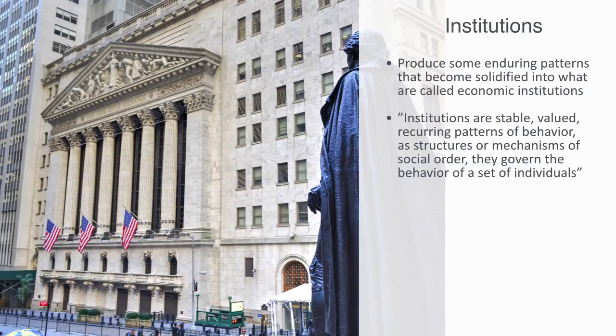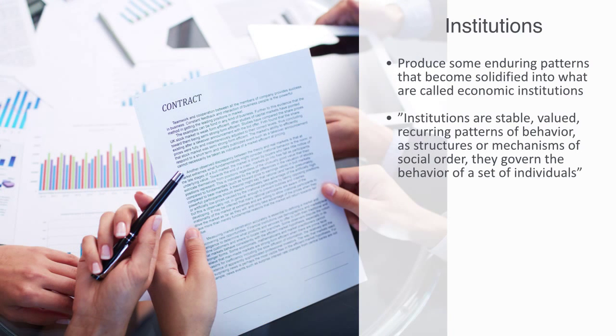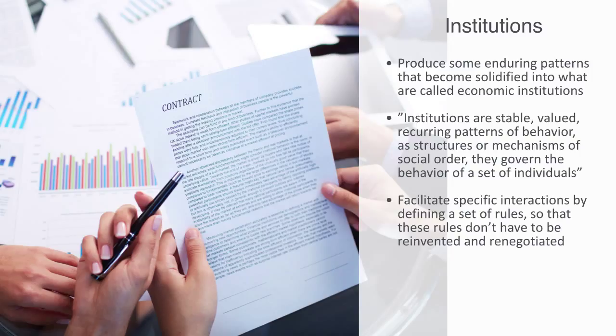These institutions facilitate specific interactions by defining a set of rules, so that rules don't have to be reinvented and renegotiated for every agent, for every new choice or for every new interaction. These institutions enable automatic, well-defined behavior and interactions, that facilitates the coordination of economic activity. These enduring patterns that we call institutions, are composed essentially of nothing more than the coordinated choices made by individual agents. Their submission to follow predefined protocols, but they become embodied within abstract principles and rules, that both enable and constrain the individual agents within the institution.